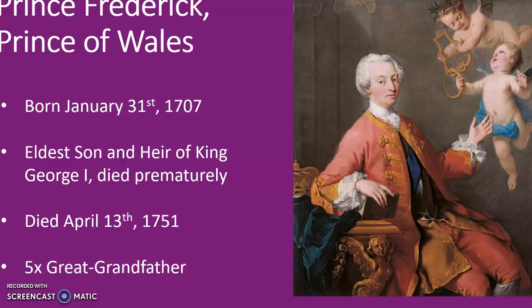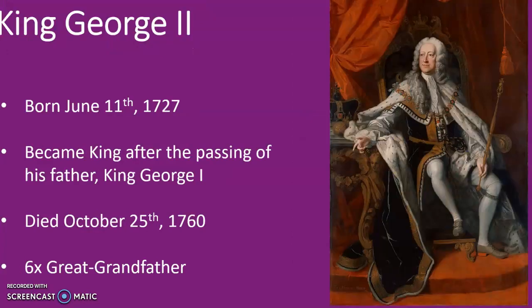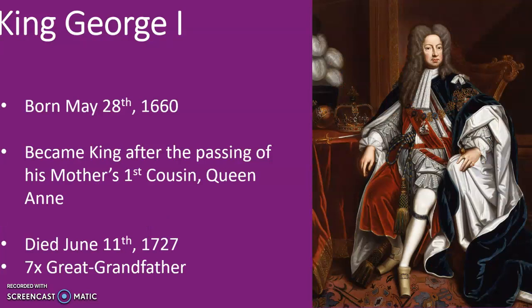King George II was born June 11th, 1727, and was the current Queen's sixth great-grandfather. Moving further back, we get to King George I. What's interesting about King George I is that he was from the House of Hanover — he was German, and you might think he had really no right to inherit the British throne. However, due to some inheritance rules regarding Protestantism and a few other things, this actually did make King George I the rightful heir to the British throne. He became king after the passing of his mother's first cousin, Queen Anne, who was the last of the Stuart monarchs.